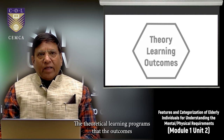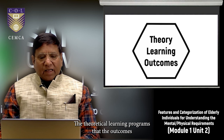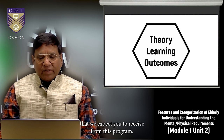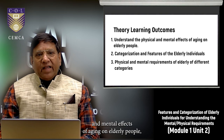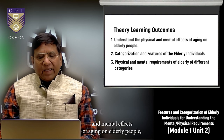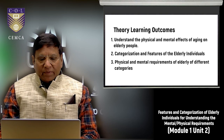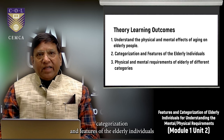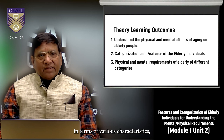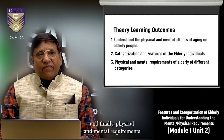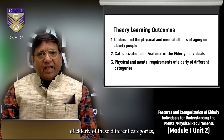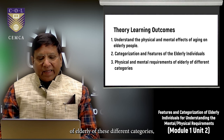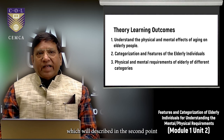The theoretical learning outcomes we expect from this program are: first, to understand the physical and mental effects of aging on elderly people; second, categorization and features of elderly individuals in terms of various characteristics; and third, the physical and mental requirements of these different categories.